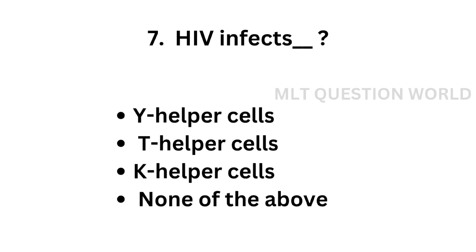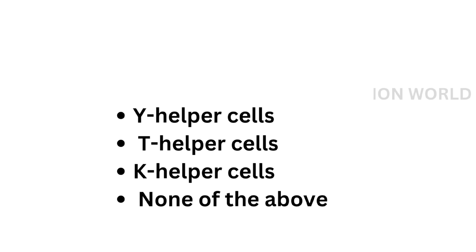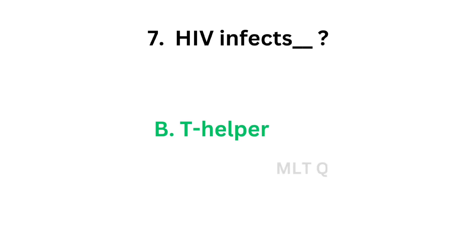Question number 7: HIV infects which of the following? Option A, Y helper cells; option B, T helper cells; option C, K helper cells; option D, none of the above. The correct answer is option B, T helper cells. HIV infects T helper cells.